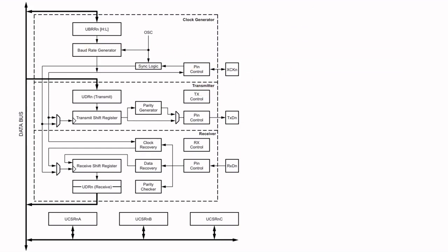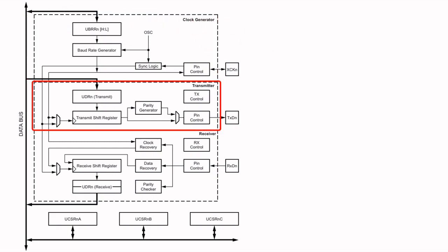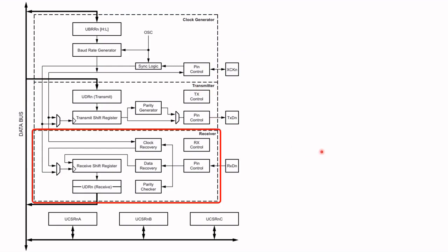Now basically there are three main parts to the USART. The first part is the clock generator, which is enclosed in the red box labelled clock generator. Then the second part is the transmitter, and thirdly there is the receiver.